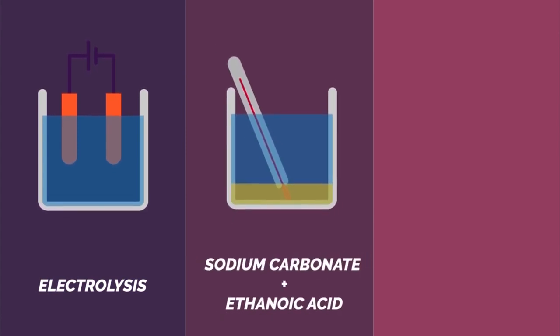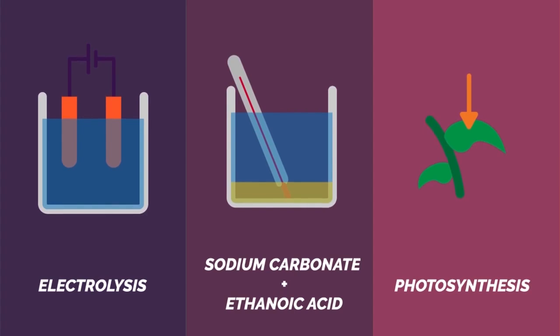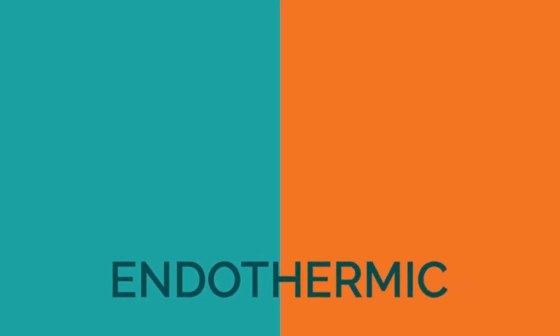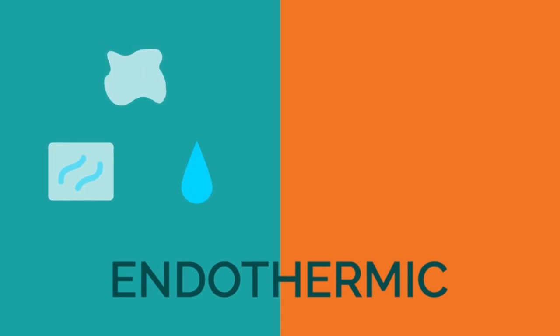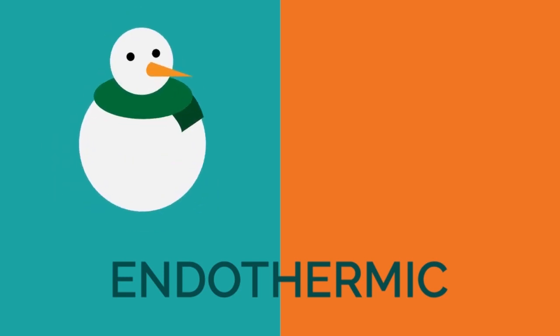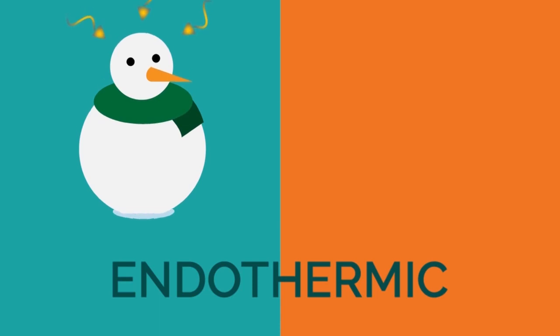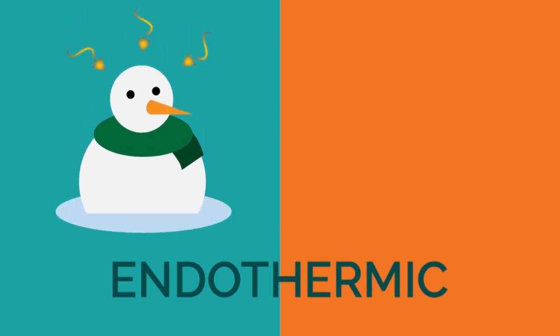Some examples of endothermic reactions are electrolysis, the reaction between sodium carbonate and ethanoic acid, and photosynthesis. Endothermic reactions can also be seen in physical processes. When something melts, it goes from a solid to a liquid — for this to happen bonds need to be broken, and to break bonds energy needs to be put in, like a melting snowman.